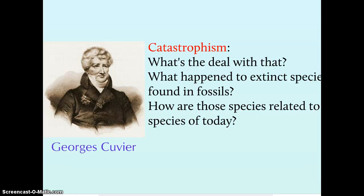Another idea that influenced Darwin was catastrophism. This was an early explanation for how different fossil specimens were created. Cuvier said there were points in history where major cataclysmic events killed off large numbers of organisms — producing those extinct fossils — and new organisms would simply move in and replace them. But people started to ask questions about how those extinct species were related to species we see today.